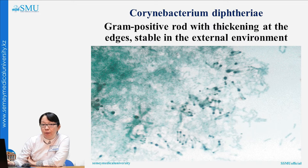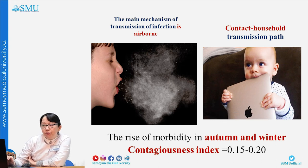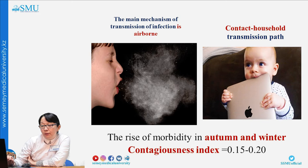Corynebacteria are gram-positive bacteria, stable in the external environment. Regarding epidemiology, the main mechanism of transmission of infection is airborne, sometimes contact-household. Season is especially autumn-winter, and the contagion index is 0.15–0.20.